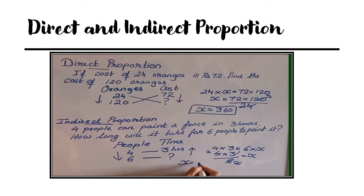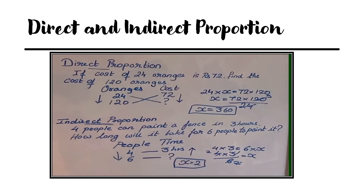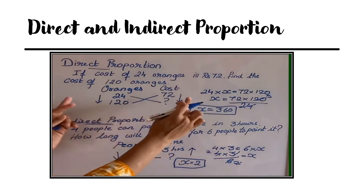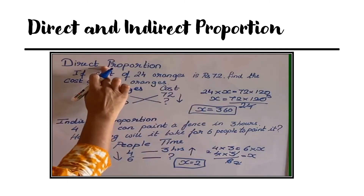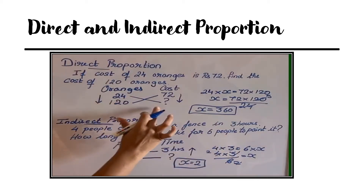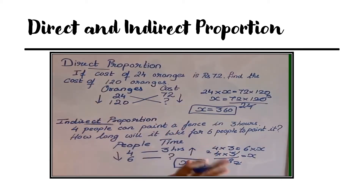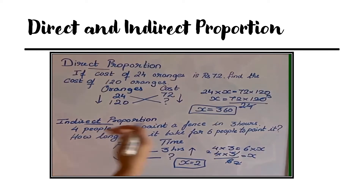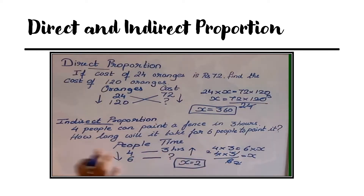When one quantity increases and the other also increases in the same way, this is direct proportion. To solve direct proportion, we have to do cross multiplication. In indirect proportion, when one increases the other decreases — opposite. To solve indirect proportion, we have to do straight multiplication.